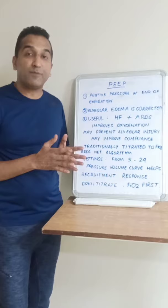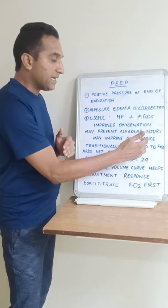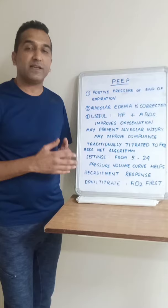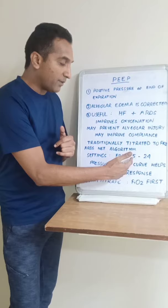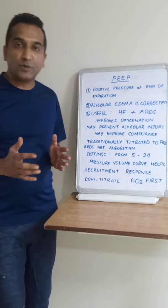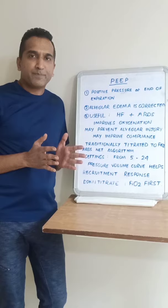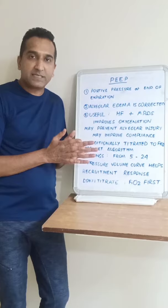Traditionally, the PEEP setting is titrated to the FiO2 according to an algorithm present in the ARDS trial, the largest trial on ARDS patients. The PEEP is set from 5 to 24 for a FiO2 from 21 to 100%. According to the FiO2 needs, you set a PEEP pressure. Otherwise, you can keep titrating the PEEP to find a point where lung compliance is the best, oxygenation is the best, and pressures are the least.